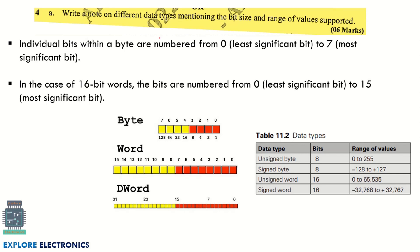The next question asks you to write a note on different data types, mentioning the bit size and range of values supported. Cover data types such as unsigned byte, signed byte, unsigned word, and signed word, showing how byte, word, and double word are represented along with the number of bits and range of values for each.